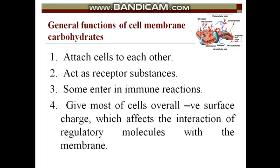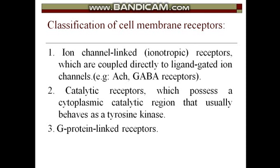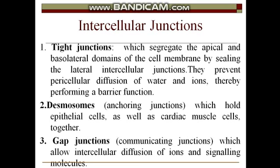Cell membrane carbohydrates attach cells to each other, act as receptor substances, participate in immune reactions, and give the overall negative charge affecting cell interactions. Cell membrane receptors are classified as either ion channel or ionotropic receptors — such as GABA and acetylcholine receptors — or G-protein coupled receptors.